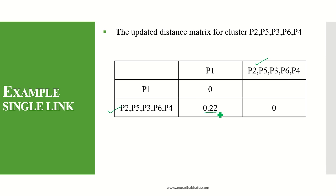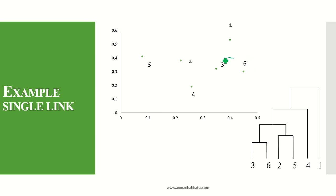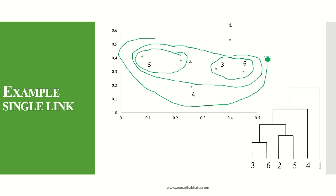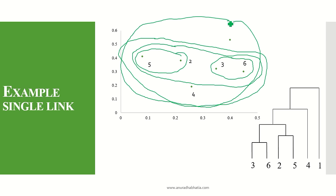The last remaining point is P1, which by default merges into the complete cluster. The dendrogram shows all five cluster-formation steps: first {P3,P6}, then {P2,P5}, then {P2,P5,P3,P6}, then adding P4, and finally adding P1 to form the complete cluster. This is how agglomerative clustering combines individual clusters together to form one big cluster.